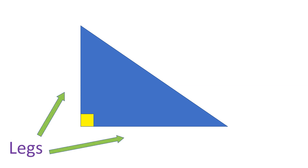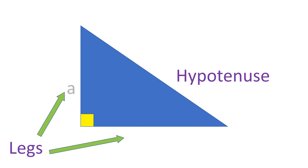A right triangle. Every right triangle has two parts: the legs and the hypotenuse, which is the side opposite to the right angle, and it is always the longest side. I will name these legs A and B, and for the hypotenuse, let's name it C.